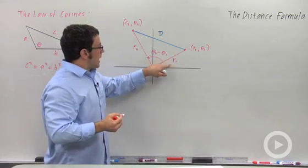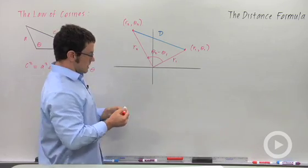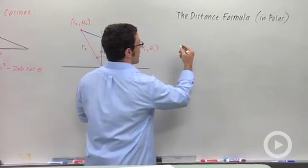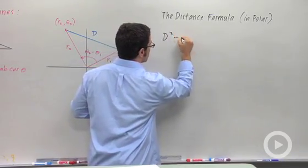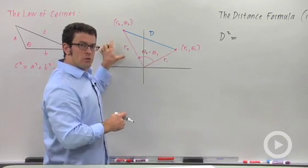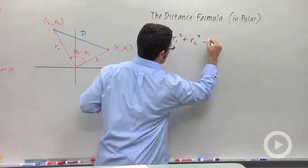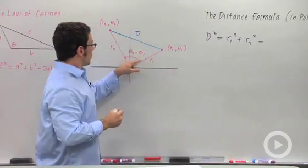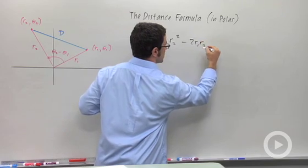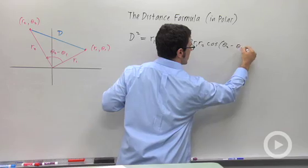So I have two sides and the angle between them, and I'm ready to use the law of cosines to derive a distance formula. The distance formula looks like this: d squared equals r1 squared plus r2 squared minus twice the product r1 and r2, times the cosine of the angle between them, which is theta2 minus theta1.